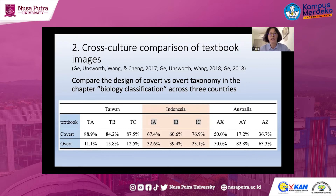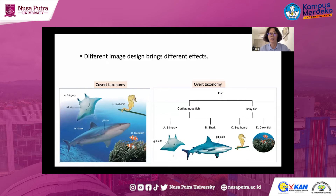More than 80% of Taiwanese textbook images belong to covert taxonomy, while Indonesia and Australia have much lower percentages. Indonesia and Australia use overt taxonomy design much more than Taiwanese textbooks. Returning to the question: which kind of image design brings a better learning effect? My previous study suggests that overt taxonomy brings better reading and learning effects.